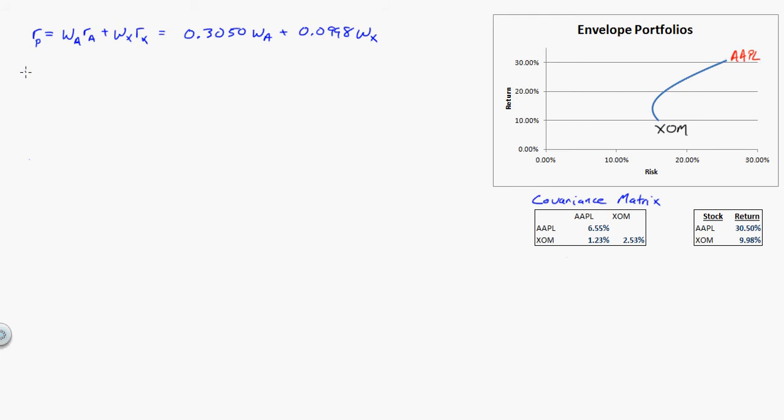Well, the volatility for the portfolio, sigma squared, is going to be equal to the weight in the first asset, which is going to be Apple, squared, times its variance.